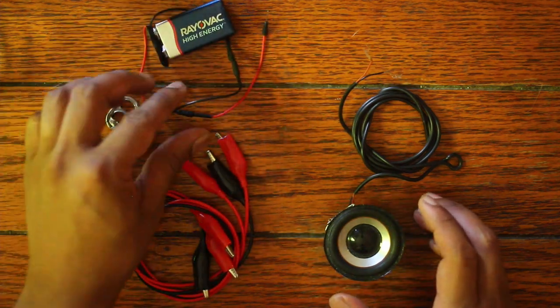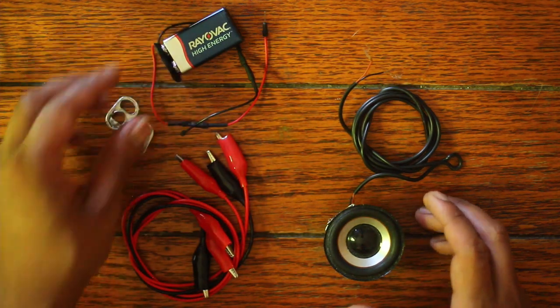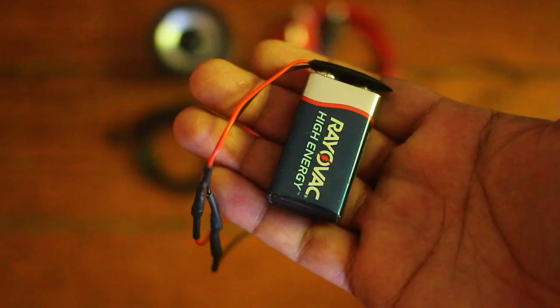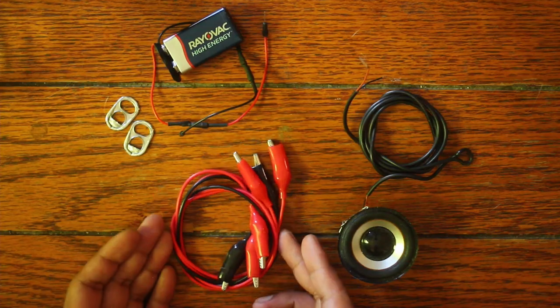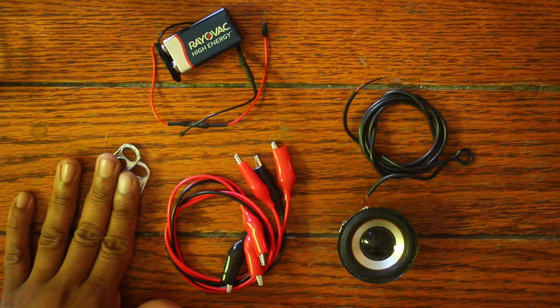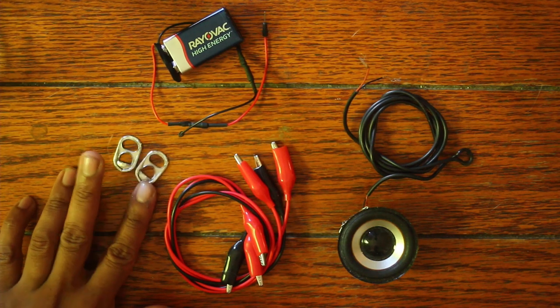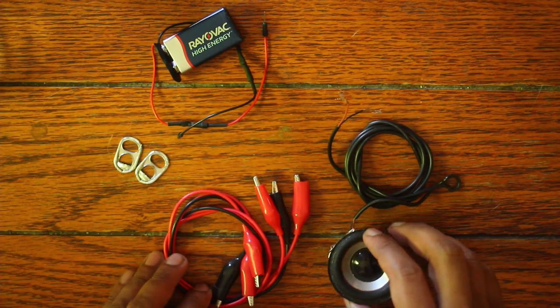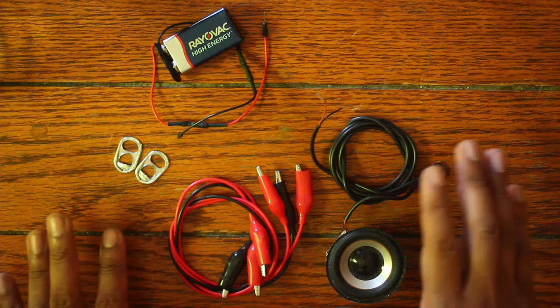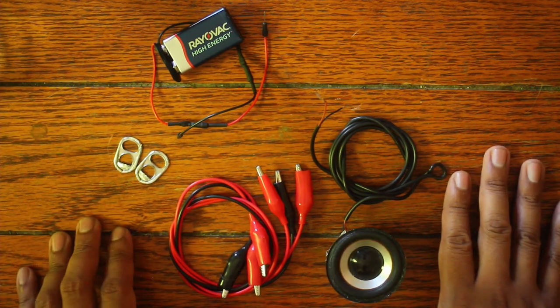I'm going to be making a simple oscillator using a battery, a speaker, some wires, and some soda can tabs. And with these simple components, I'm going to make something which is called a Victorian oscillator.